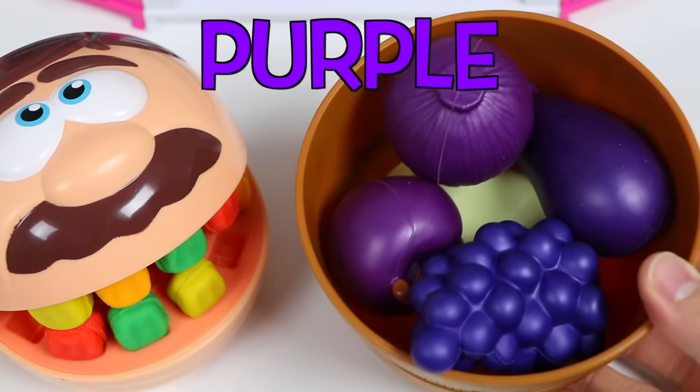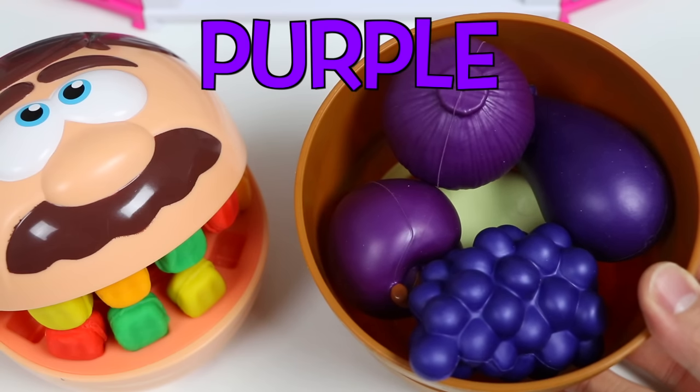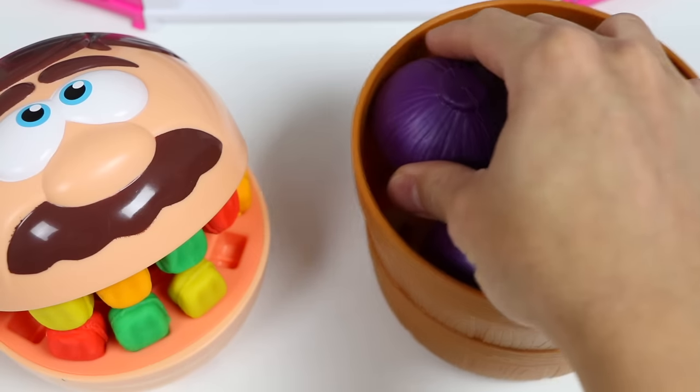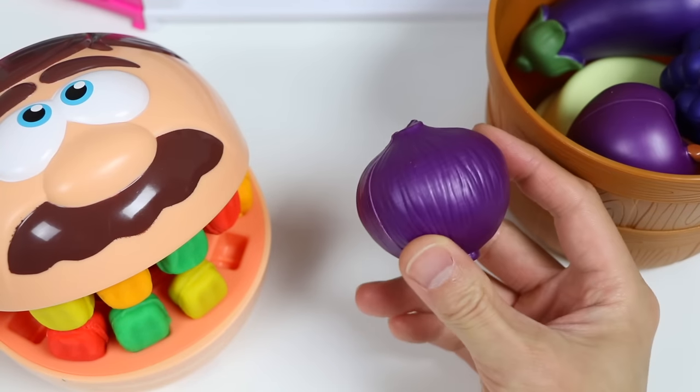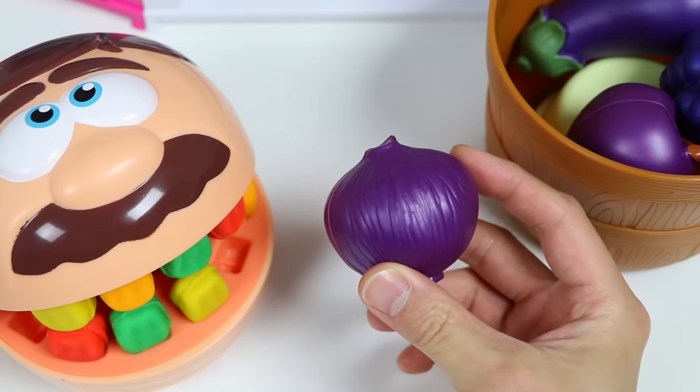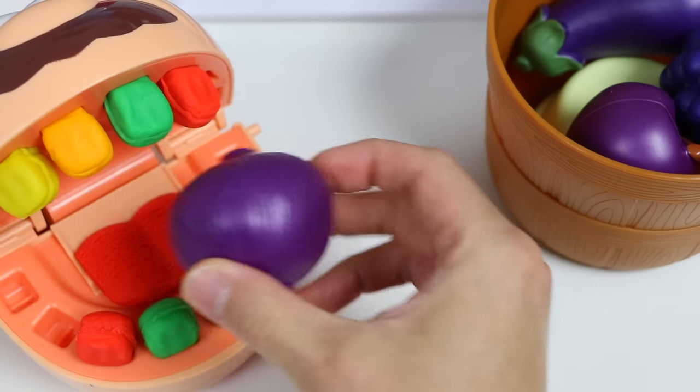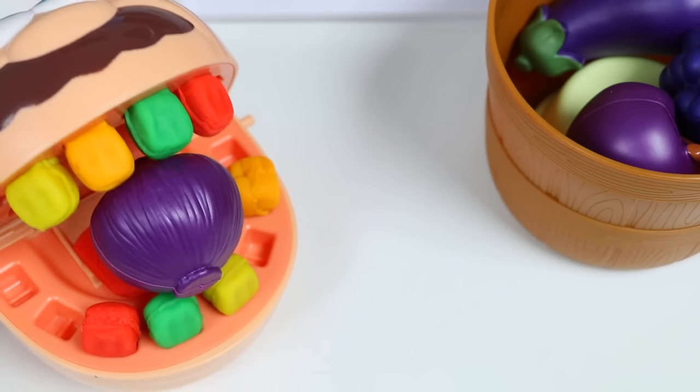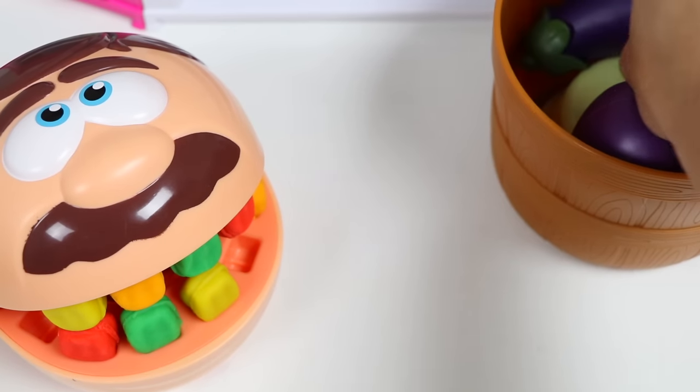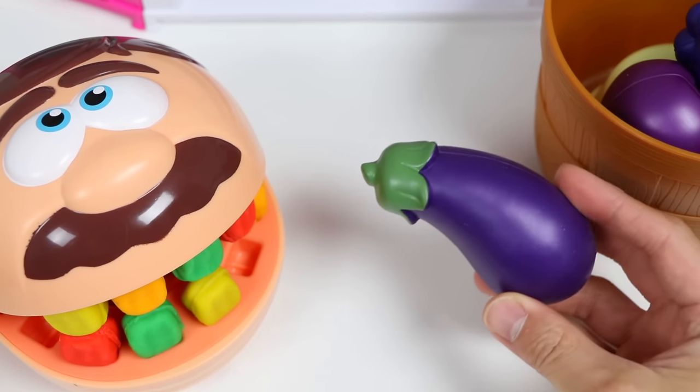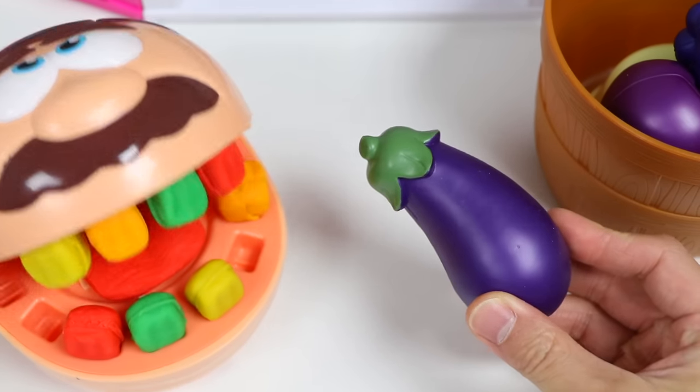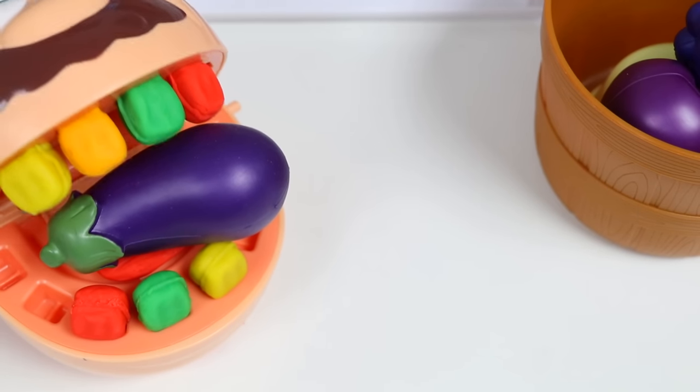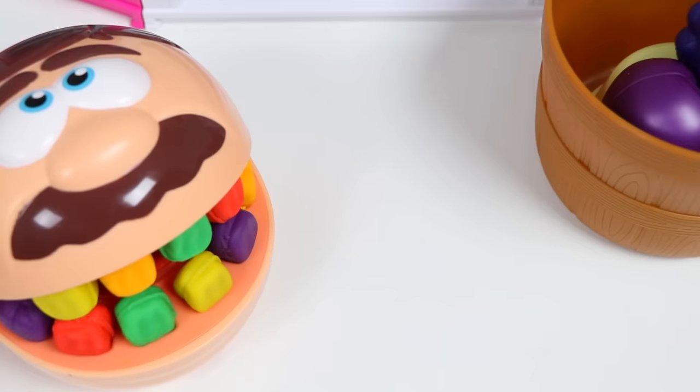All right, Mr. Play-Doh Head. This basket is filled with purple fruits and veggies. Let's see. What do we give Mr. Play-Doh Head? Oh. Try this onion. It'll have a really strong flavor. Hopefully, you don't tear up. Okay, now try this purple eggplant. This will have a somewhat bitter, but pleasant taste.